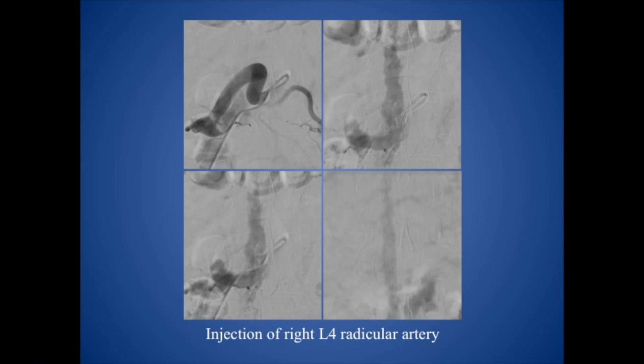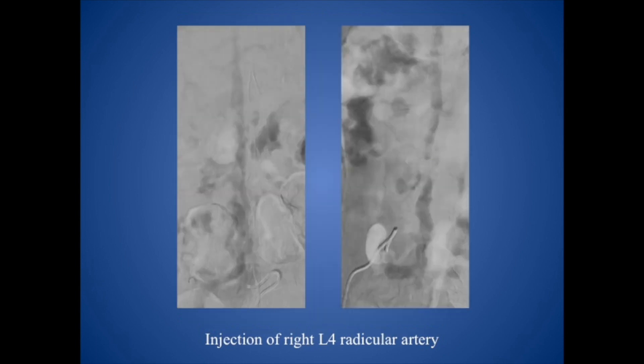We then performed a complete spinal angiogram and the only abnormal connection was at the level of the right L4 radicular artery. You can observe a very prominent artery with a single channel draining into the large epidural vein, which ascends up to mid-thoracic levels.